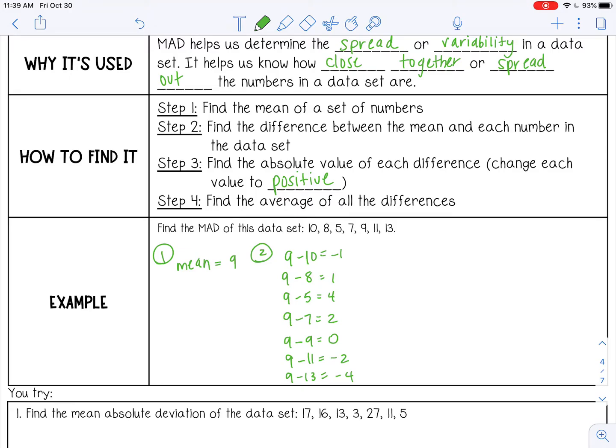Step 3 is I'm going to change all those positive. So positive 1, that's already positive. If it's already positive, just leave it. And then the last step is to find the average of those numbers. So add all this together, divide by 7. And when I did that, I got 2.